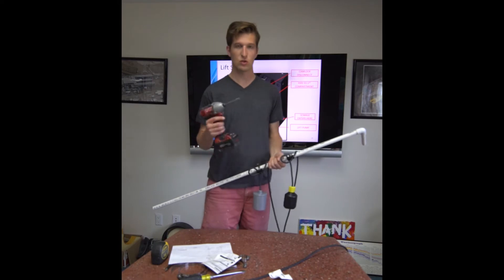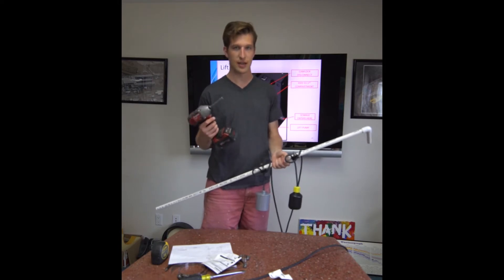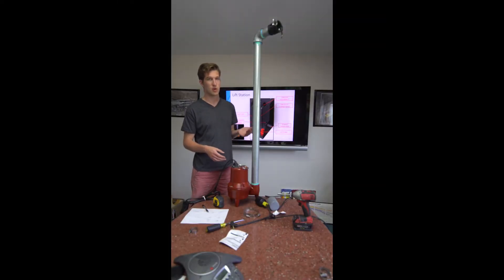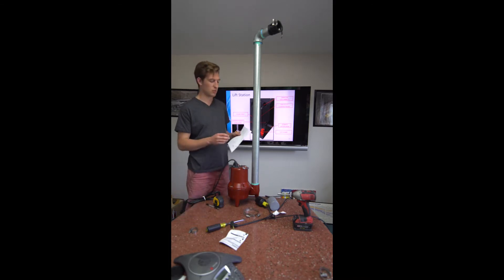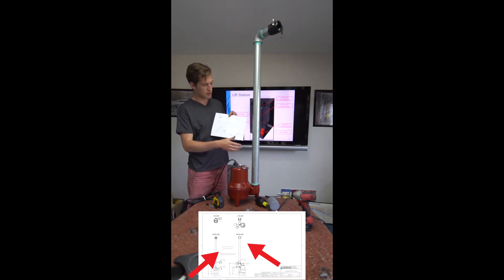Easiest way to do this is with a screwdriver or a 5/16 hex head. So this is what a lift station pump looks like when it comes out of the system. Though this one is very clean and yours probably will not be. So the first thing we want to do is look at the piece of paper that was provided to you and will be displayed at the bottom of this screen. This is the lift station pump so we're going to look at all the dimensions that are on this right hand side here.